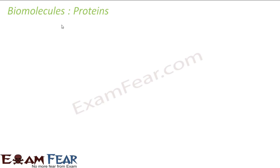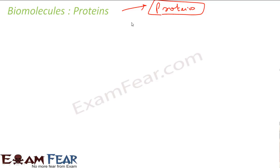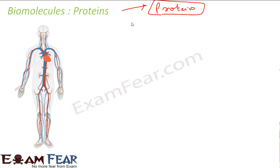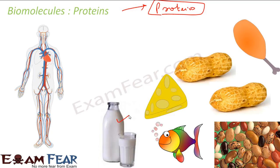Let's start with proteins. The word 'protein' is derived from 'protease,' a Greek word meaning 'prime important.' They are the prime important compounds for the body and the most abundant biomolecules in living systems. Their chief sources are milk, cheese, pulses, peanuts, fish, and meat.